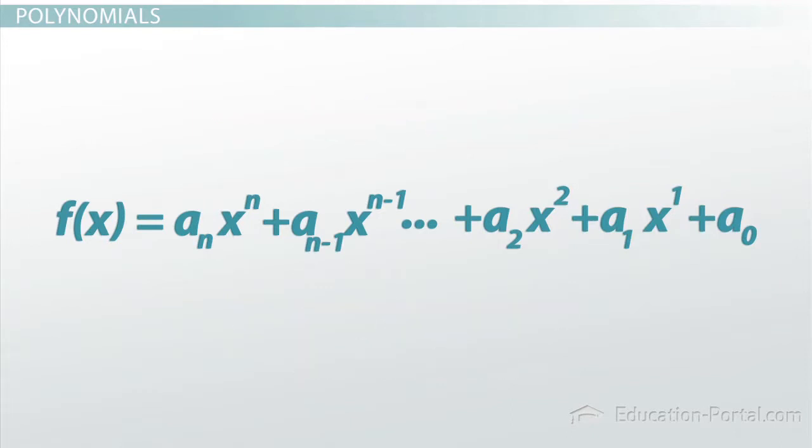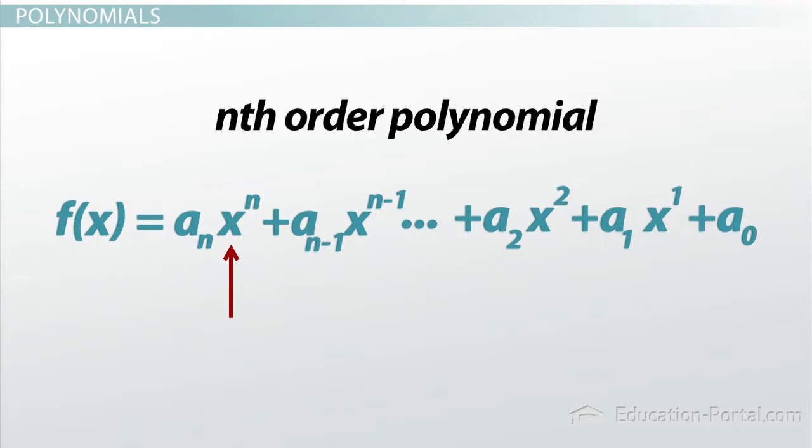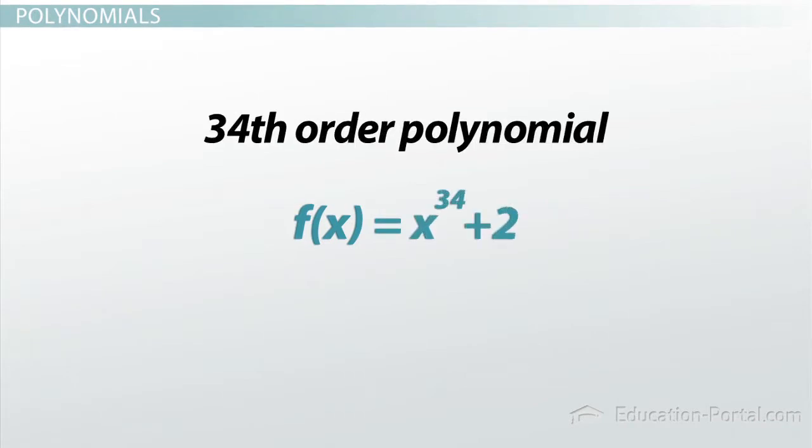The largest power in this equation, x to the n, defines the order of this polynomial. In this case, the polynomial is an nth order polynomial. If you have a polynomial like f of x equals x to the 34 plus 2, you have a 34th order polynomial.